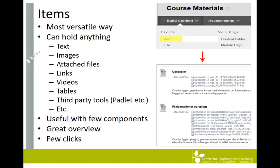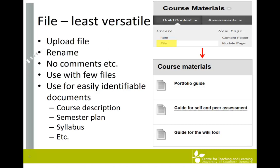The File option is the least versatile way of uploading materials to Blackboard. With File, you can simply upload files, provide them with a new name or heading, but you cannot add comments. Only use File when you have few files to upload and when these are easily identifiable — such as the course description or the semester plan. Note that these specific file types should be uploaded to the course information section.